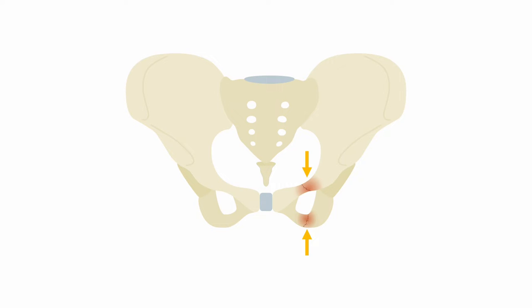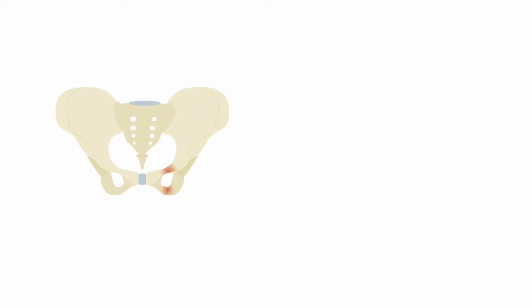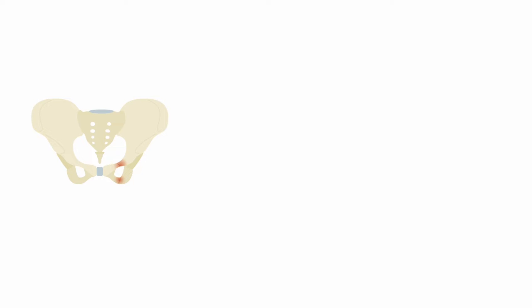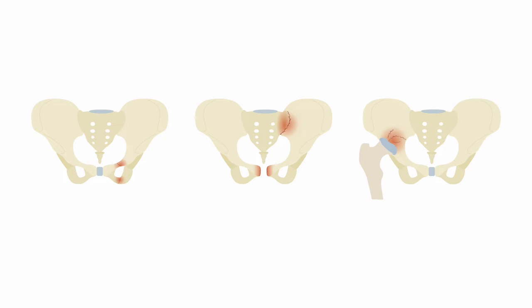If you see one pelvic fracture, you will find others. In this MedMastery lesson, we will consider three types of pelvic fractures: pubic ramus fractures, sacral fractures, and acetabular fractures.